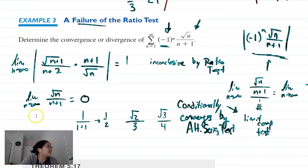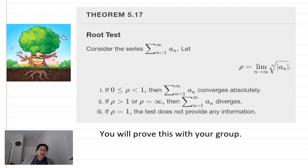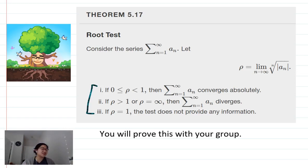The root test takes the nth root and looks at the limit as n goes to infinity of that. With the number we get from our nth root limit, we can say pretty much the same things as the ratio test: if that number is between 0 and 1, we have absolute convergence; if it's greater than 1, our series diverges; and if our number equals 1, then we don't know — it's inconclusive.